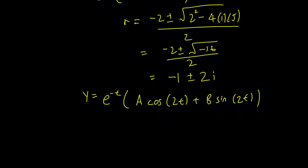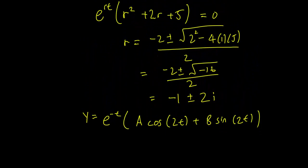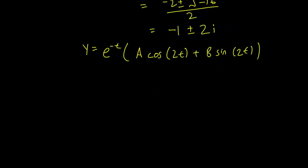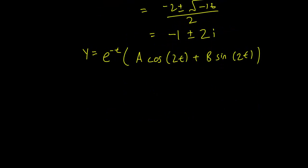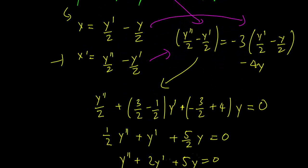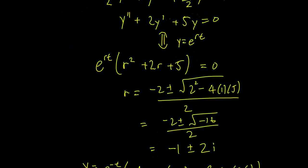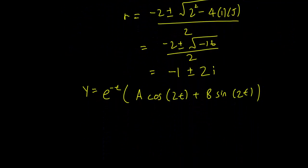To find a general solution for x, we have to take the derivative of y first. We will use the equation x equals y prime over 2 minus y over 2 to solve for x. So first we have to find y prime — let's be careful with this.